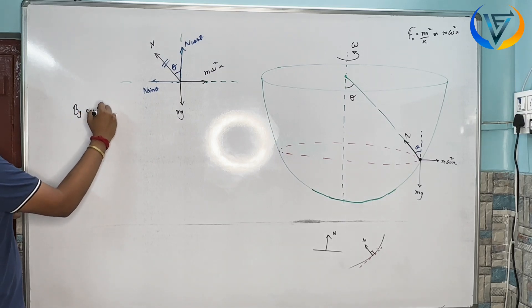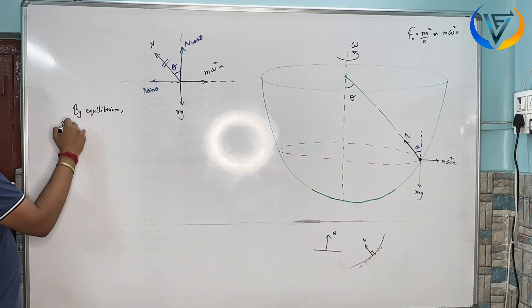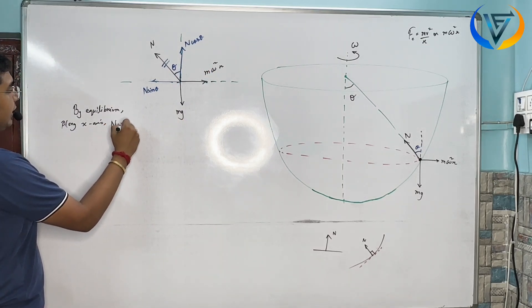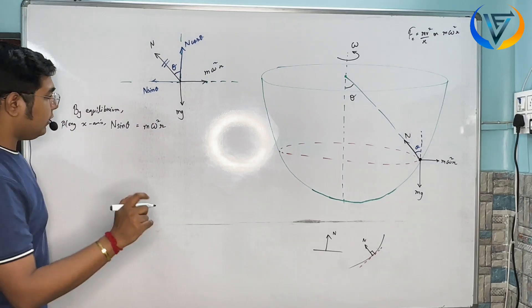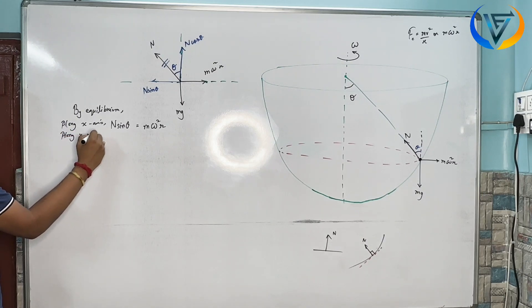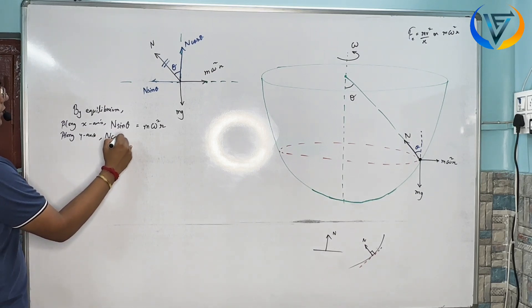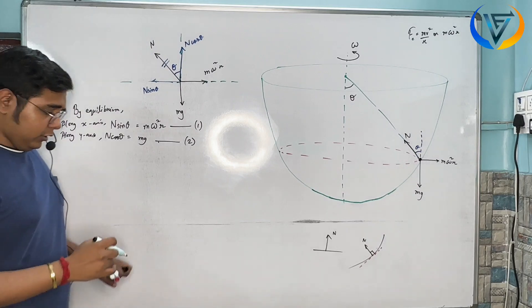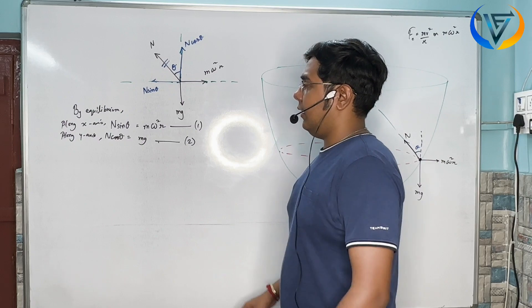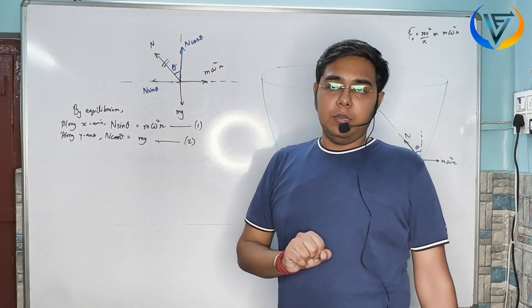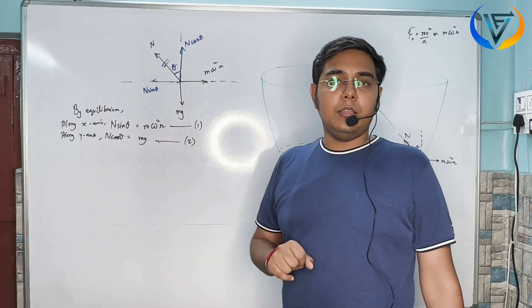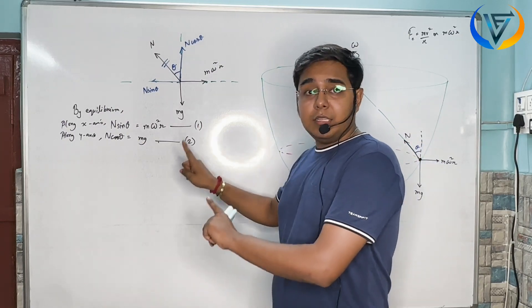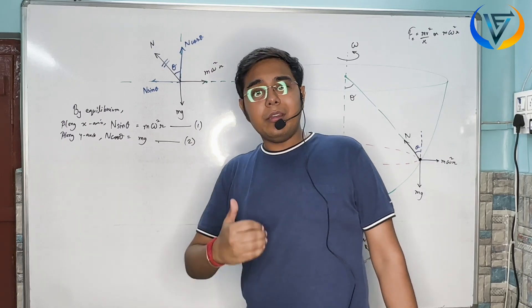By equilibrium, along the x-axis, N sin theta equals M omega square R. Along the y-axis, N cos theta equals Mg. In both equations, normal N and mass M are unknown variables. We need to eliminate them by dividing the equations.